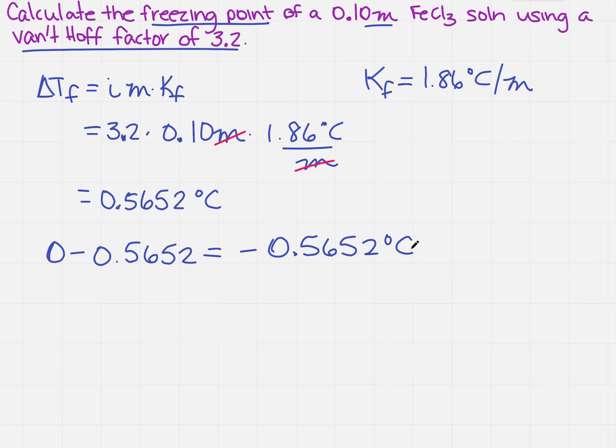Now remember, we need to do significant figures. So in the problem I've got 2 and 2, so I'm going to need 2. So the 5 tells me I'm going to round up, so I'm going to get negative 0.57 degrees C.